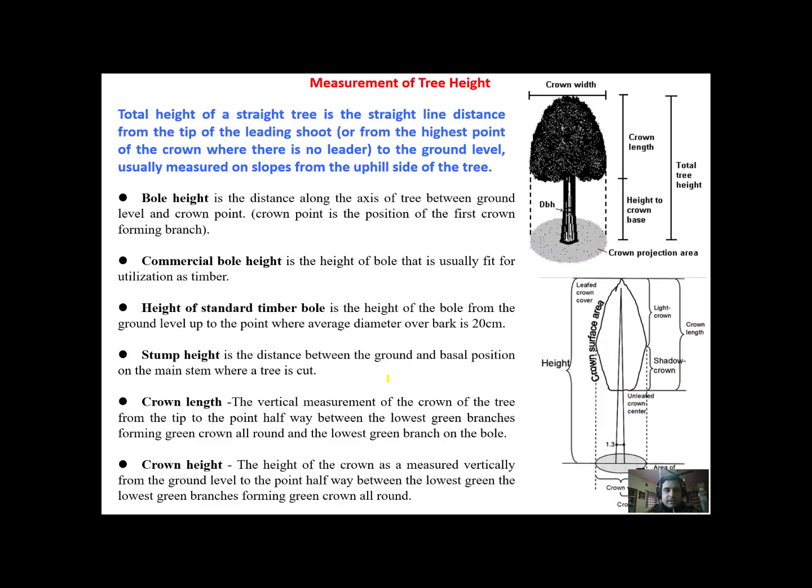Welcome back to the next topic on measurement of tree height. Total height of a straight tree is the straight line distance from tip of the leading shoot or from the highest point of the crown where there is no leader to the ground level. Usually measured on slopes from uphill side of the tree.